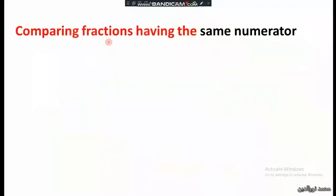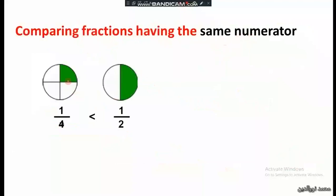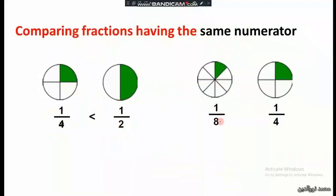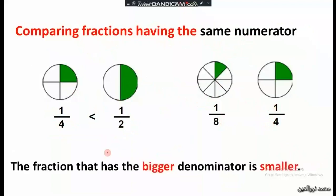For fractions with the same numerator, consider 1 over 4 and 1 over 2. The fraction with the bigger denominator is the smaller one. Since 4 is greater than 2, we invert the sign: 1 over 2 is greater than 1 over 4. This is obvious from the colored parts — one half is greater than one quarter.